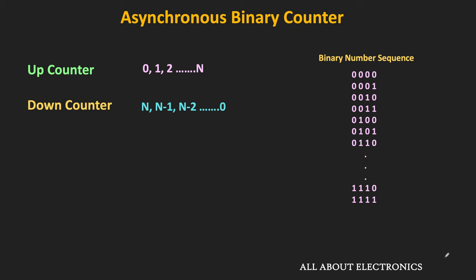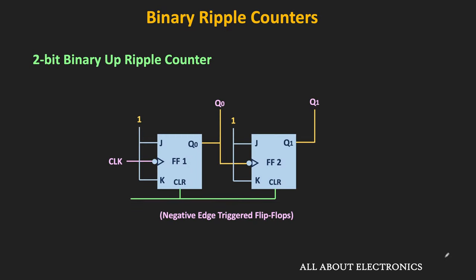Let us see the design of the 2-bit ripple counter, starting with the up counter. Since it is a 2-bit counter, we will require two flip-flops. This up counter is designed with the help of negative-edge-triggered flip-flops. The clock signal is applied to the clock input of the first flip-flop, which represents the LSB position of the count, and the flip-flop on the right side represents the MSB.